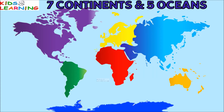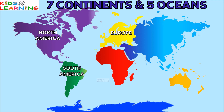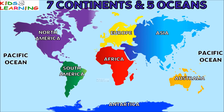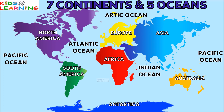Let's see all the continents and oceans once again. North America, South America, Europe, Africa, Asia, Australia, Antarctica. Now oceans: Pacific Ocean, Atlantic Ocean, Indian Ocean, Arctic Ocean, and Southern Ocean.